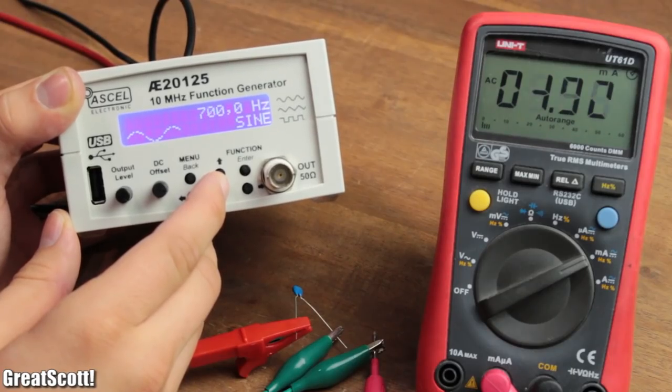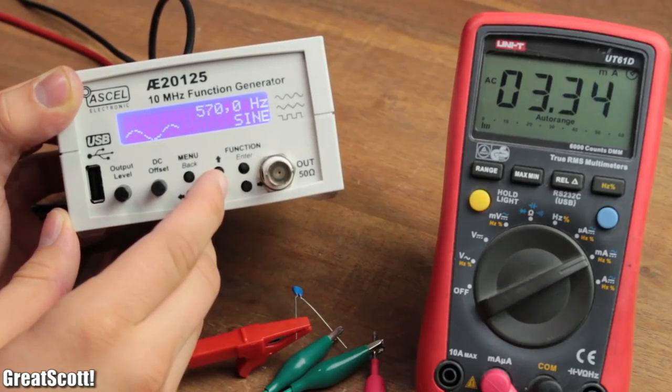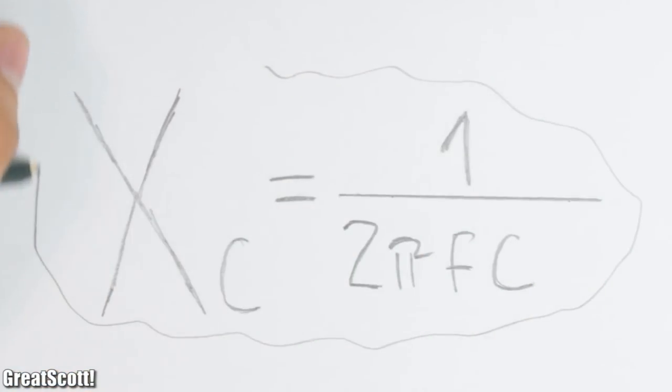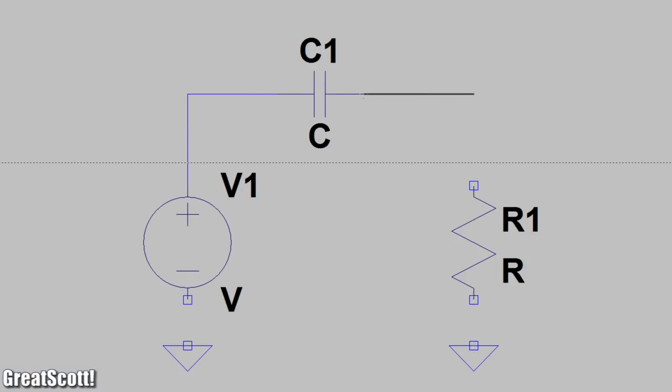And if I decrease the frequency, it's the same. Less current will flow. The final formula for the capacitive reactance looks like this. Since we know that this is basically a frequency based resistor,